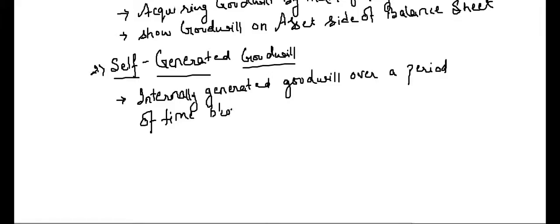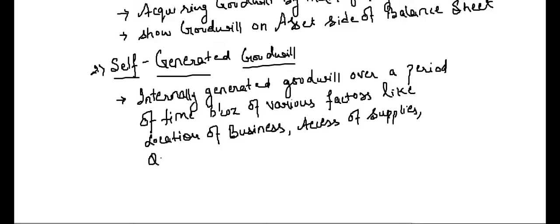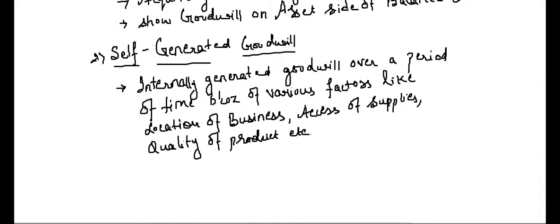Self-generated goodwill is internally generated goodwill, built over a period of time because of various factors like location of business, access to supplies — supplies means raw materials — quality of product, and so on. This is our own generated goodwill, our own reputation. In the first case we were buying the reputation of a running business; in this case we are self-generating the reputation, the reputation that we have built over years.